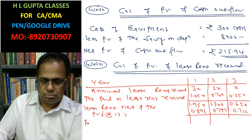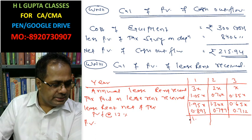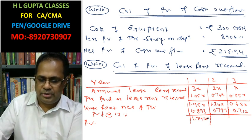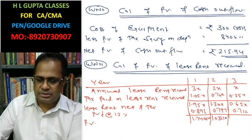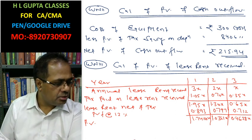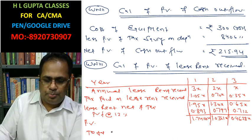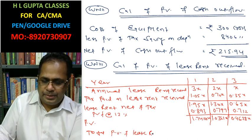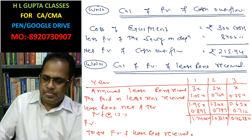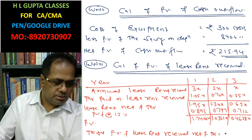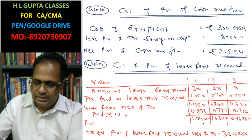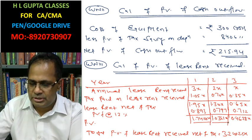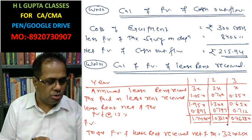Present values of lease rent net of tax: Year 1 = 1.95x × 0.893 = 1.74135x; Year 2 = 1.30x × 0.797 = 1.0361x; Year 3 = 0.65x × 0.712 = 0.4628x. Total present value of lease rent received net of tax = 1.74135x + 1.0361x + 0.4628x = 3.24025x.